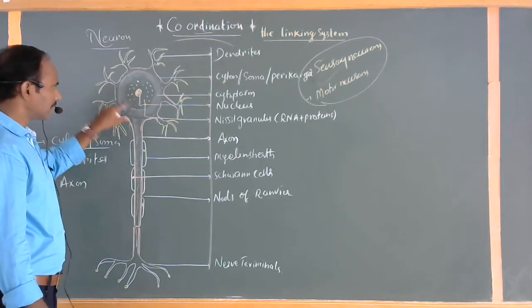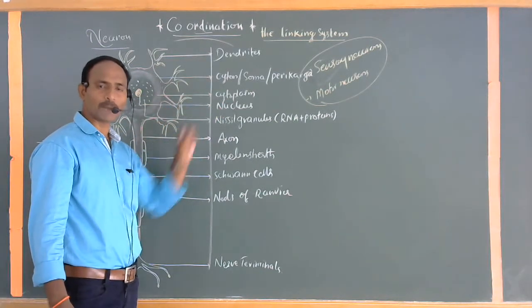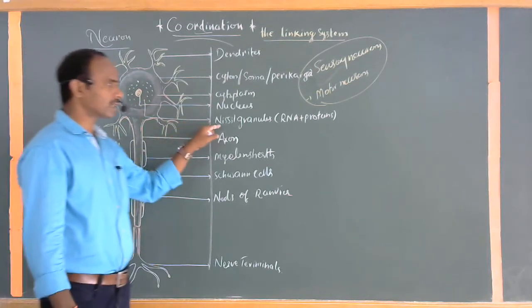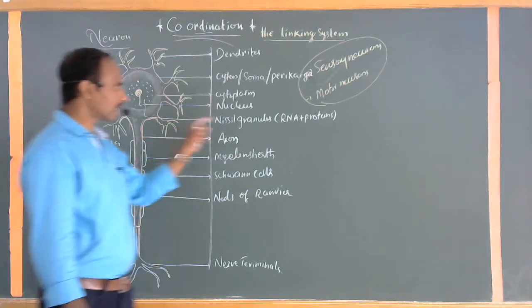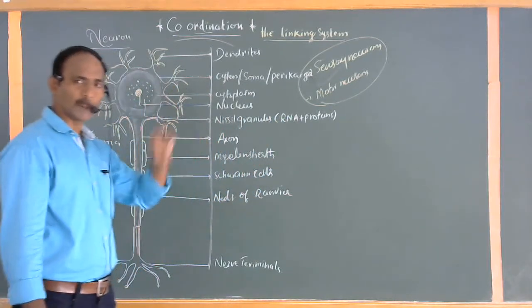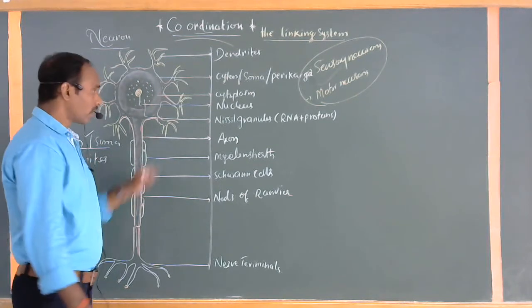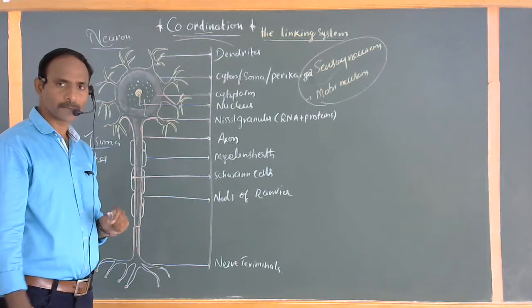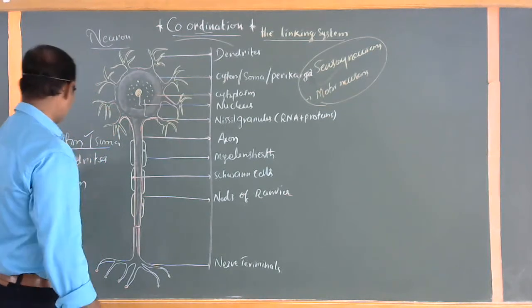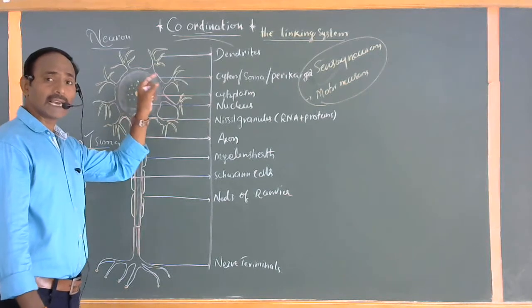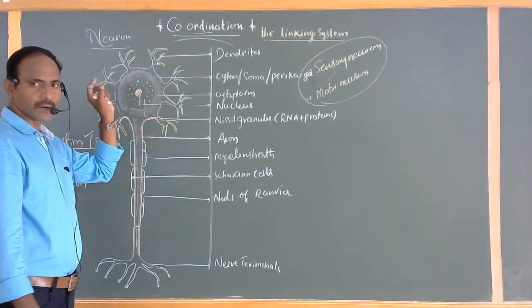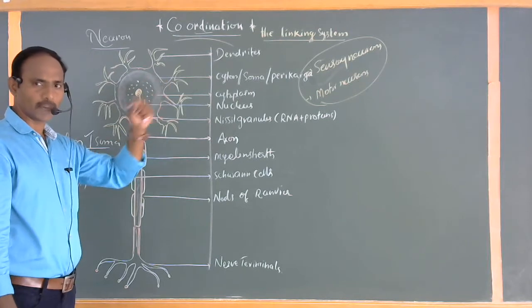The entire cytone is surrounded by cytoplasm, within which the nucleus is present. Surrounding the nucleus are Nissl granules. The presence of Nissl granules is the characteristic feature of the cytone of a nerve cell. The Nissl granules, made of RNA and proteins, act as reserved food materials, useful for proper functioning when messages are carried. The dendrites, arranged like branches of a tree, are the sites for receiving sensations and information.